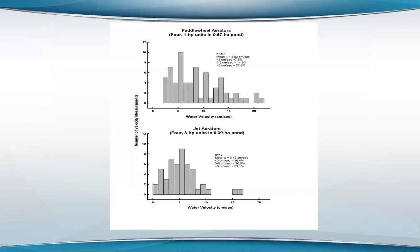Here's water velocity distribution in a pond of about 0.5 hectare with four one-horsepower paddle wheel aerators. You can see the distribution of water velocities. With jet aerators, they seem to be a little better than paddle wheels for water velocity distribution, but not necessarily better for oxygen transfer.